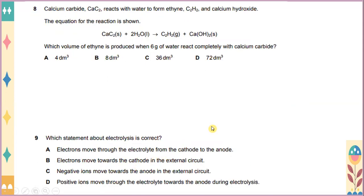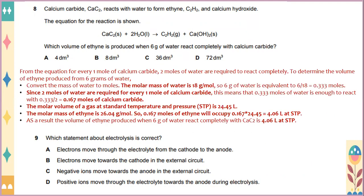Calcium carbide CaC2 reacts with water to form ethyne C2H2 and calcium hydroxide. The equation for the reaction is shown. Which volume of ethyne is produced when 6 grams of water react completely with calcium carbide?